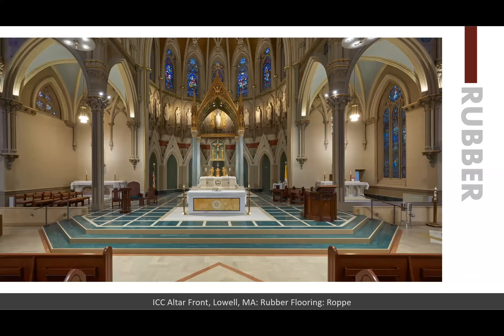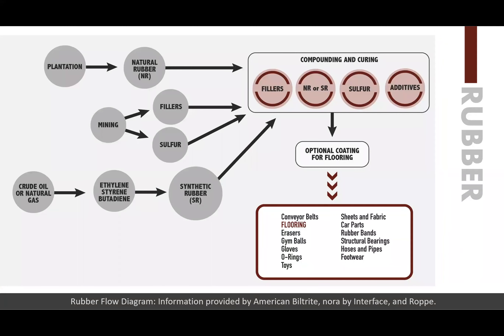Rubber is our next category to discuss. Natural rubber comes from plantations. Synthetic rubber, SBR or SR, comes from crude oil or natural gas for ethylene, styrene, and butadiene.